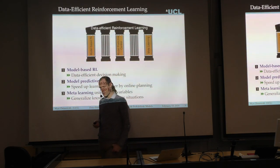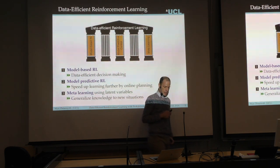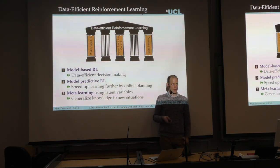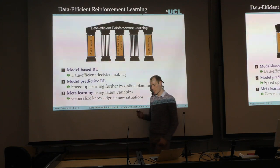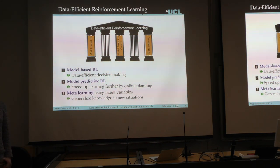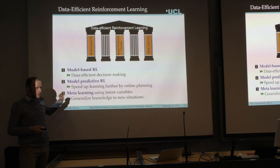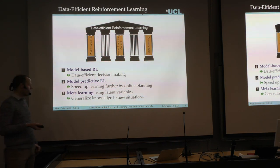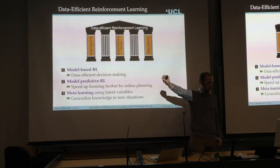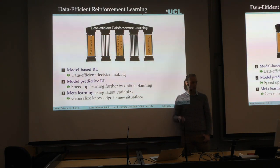What I want to use to address these challenges is a framework called reinforcement learning subject to data efficiency — autonomous learning from very small data sets, involving a decision making process. Throughout this talk, I'll go through three pillars for data-efficient RL. The first pillar is model-based reinforcement learning for data-efficient decision making. The second is model predictive control to speed learning up. The third is meta-learning using latent variables, which allows us to generalize knowledge from problems we've solved to related problems.